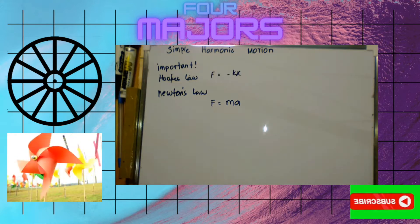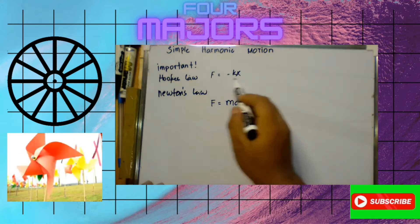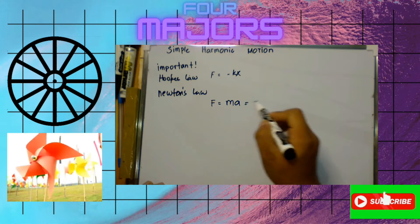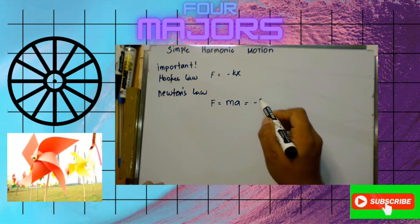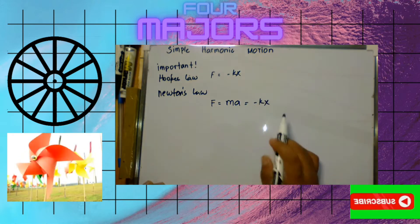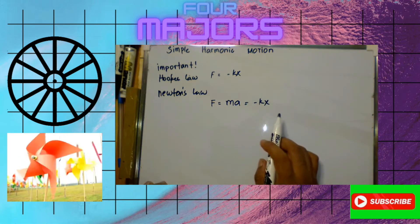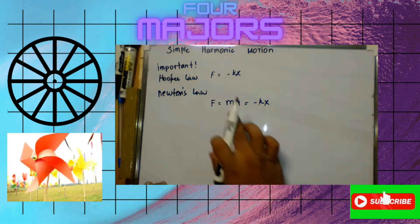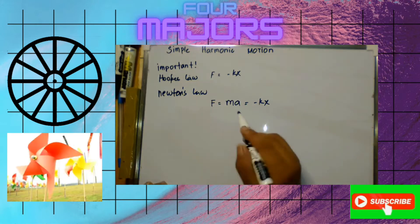Combining the two equations — Hooke's Law and Newton's Second Law — we set them equal, giving us negative kx on one side, and we can calculate the actual equation of motion.